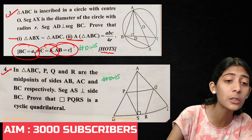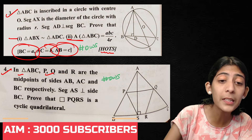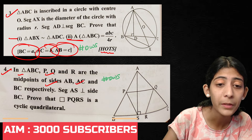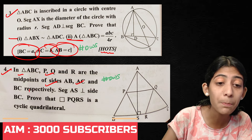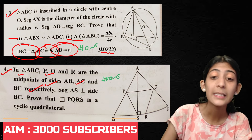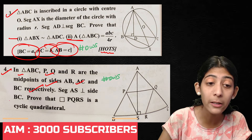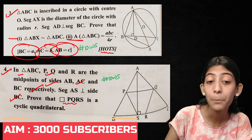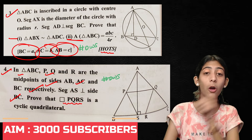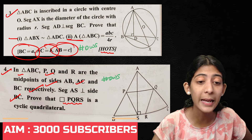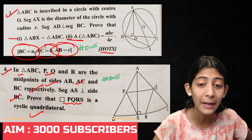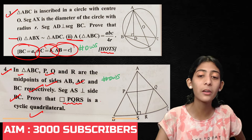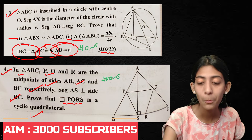Fourth question: In triangle ABC, P, Q, and R are the midpoints of sides AB, AC, and BC respectively. Segment AS is perpendicular to side BC. Prove that quadrilateral PQRS is a cyclic quadrilateral.